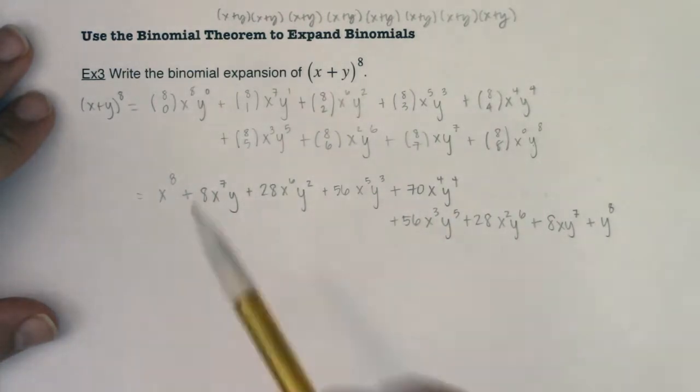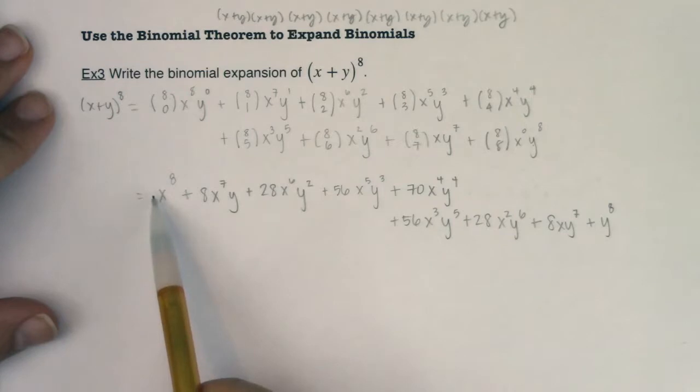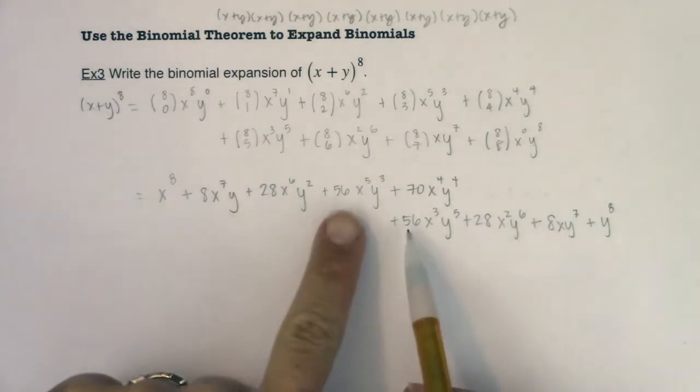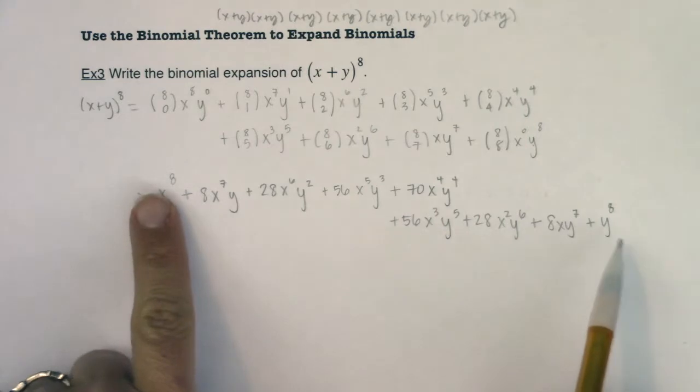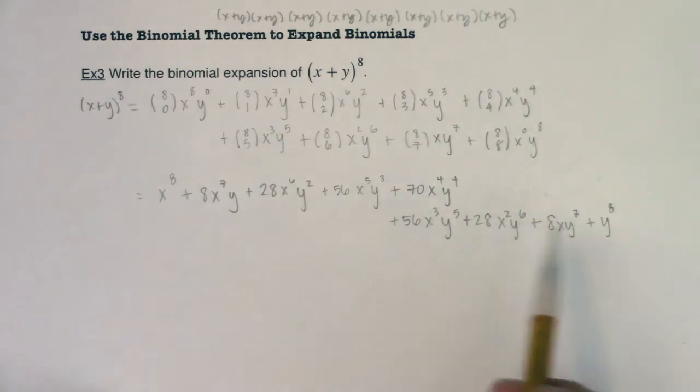And I do want you to hear the symmetry in terms of the coefficients. We went 1, 8, 28, 56, 70, and then 56, 28, 8, 1. There was symmetry. And there always is symmetry with these binomial coefficients.